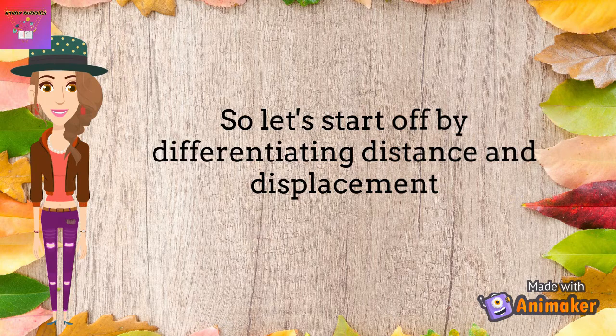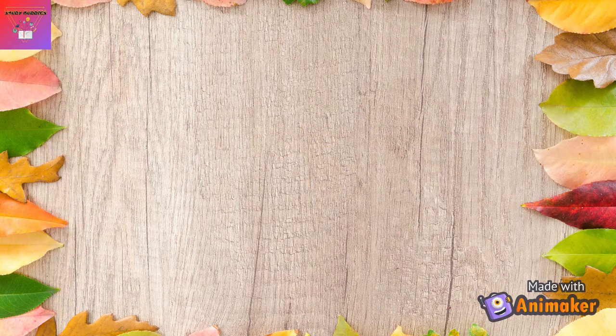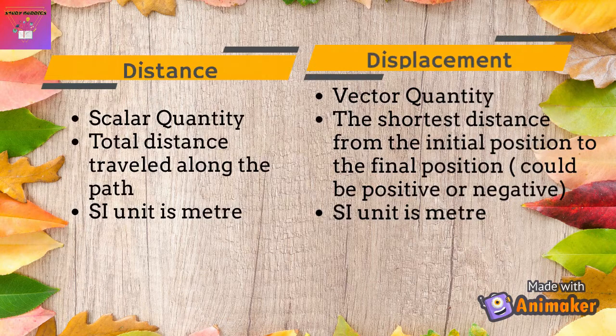Let's start by differentiating the components in linear kinematics. First, let's differentiate between distance and displacement. Distance is a scalar quantity, while displacement is a vector quantity. Distance is the total distance travelled along the path, while displacement is the shortest distance from the initial position to the final position. Displacement uses negative signs to indicate direction. The SI unit for both variables is metre.